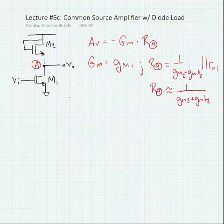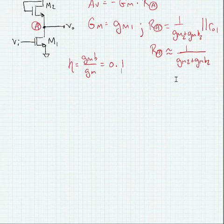We can define a ratio for the ratio of GMB to GM and a good value for this is typically approximately 0.1. GMB is about 10% of GM.